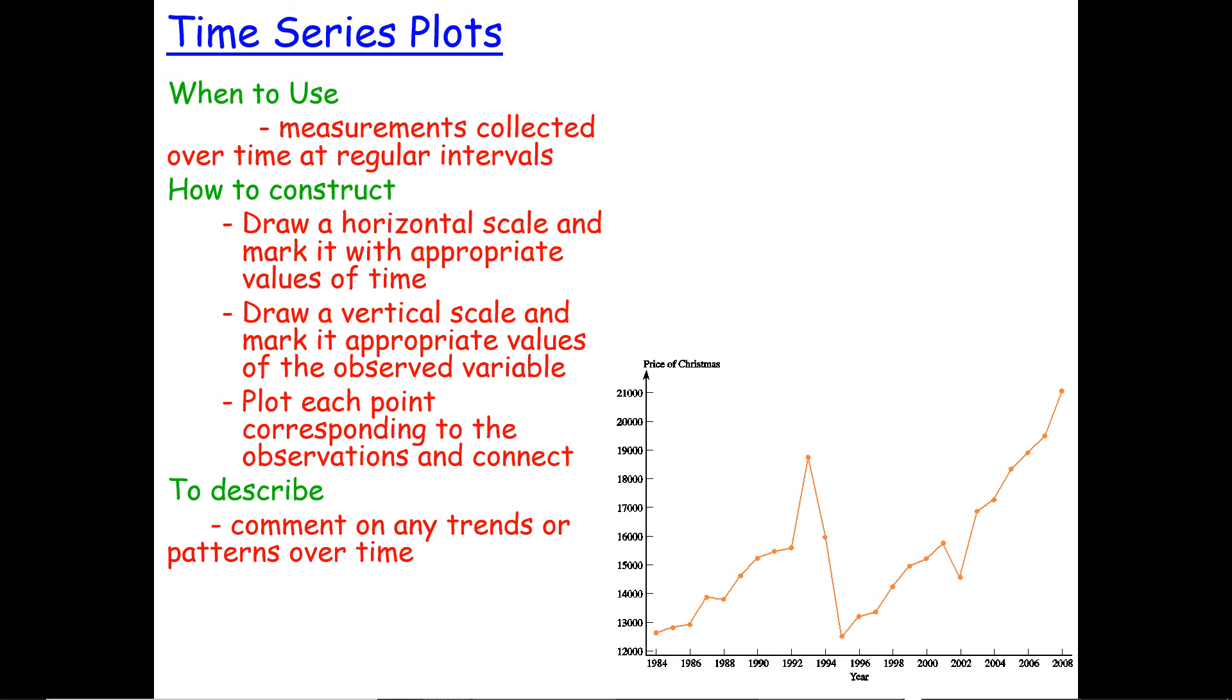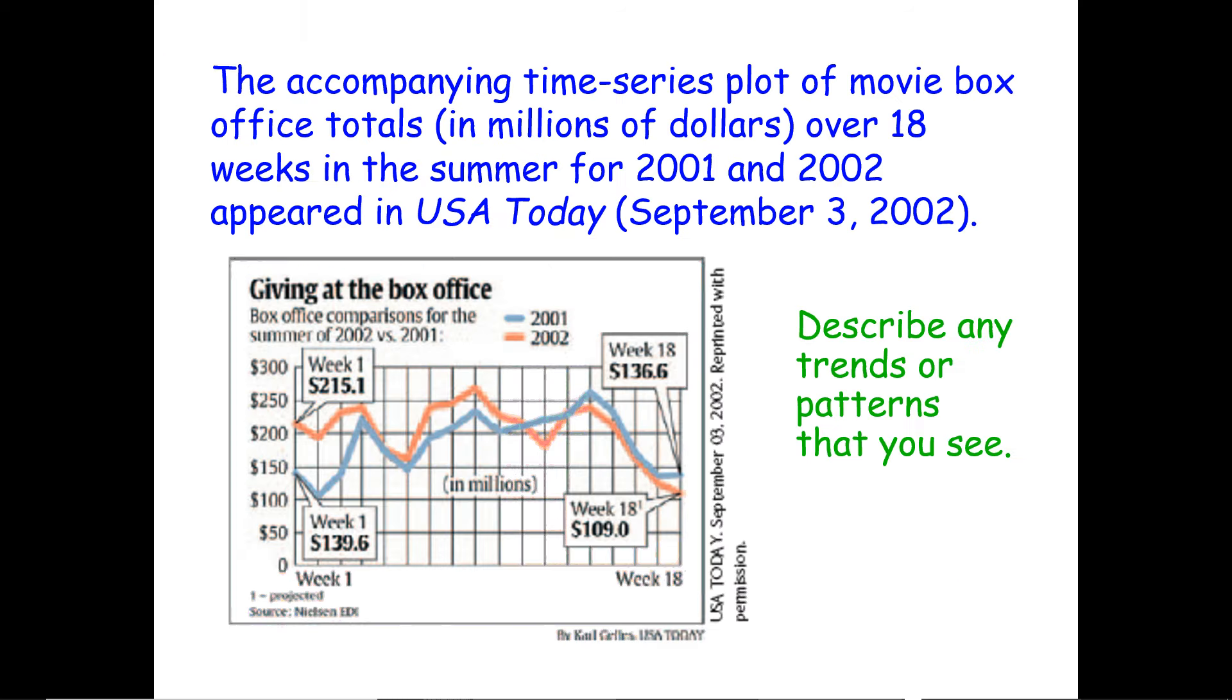Let's look at an example. The accompanying time series plot of movie box office totals in the millions of dollars over 18 weeks in the summer for 2001 and 2002 appeared in USA Today from September 3rd of 2002. We want to describe any trends or patterns that we see.